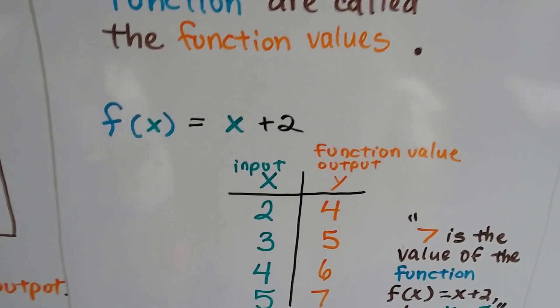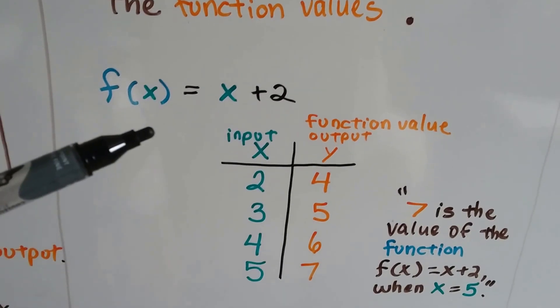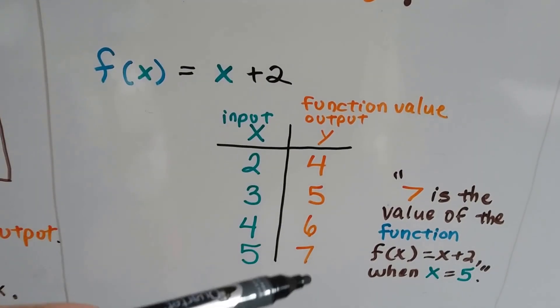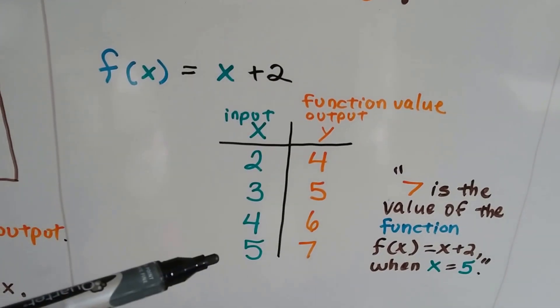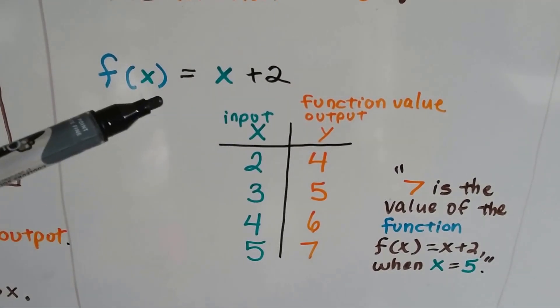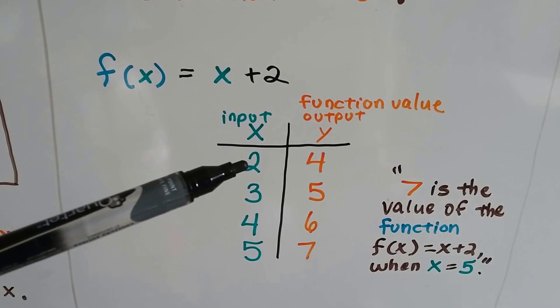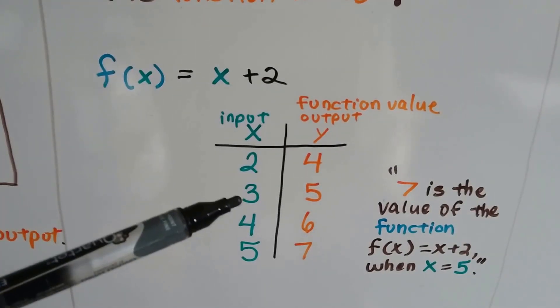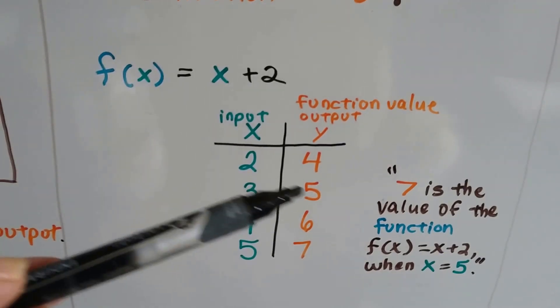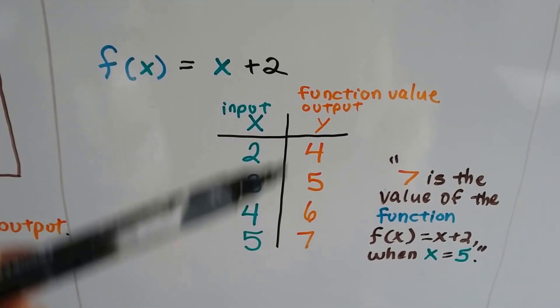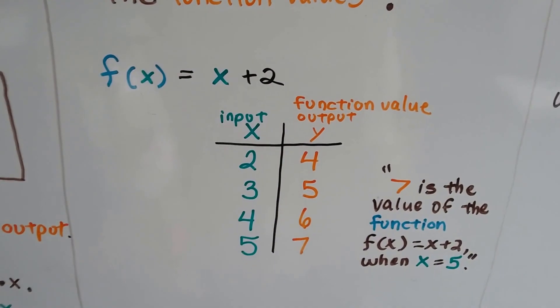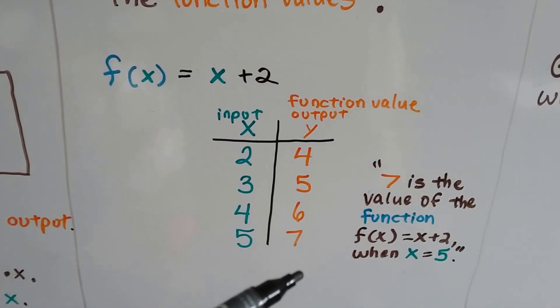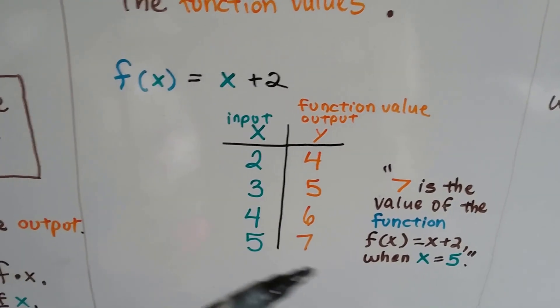We can look at it this way. The function of x equals x plus 2, here's our input, here's our function values, like a function table. So if x is a 2, then our output's going to be a 4. 2 plus 2 is 4. 3 plus 2 is 5, 4 plus 2 is 6, 5 plus 2 is 7. 7 is the value of the function when x equals 5.